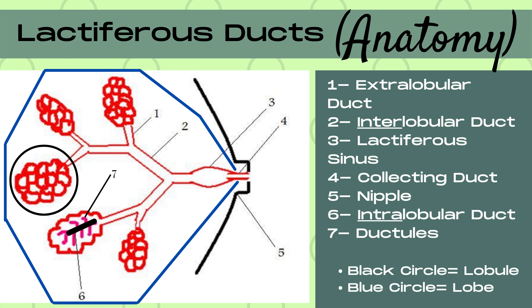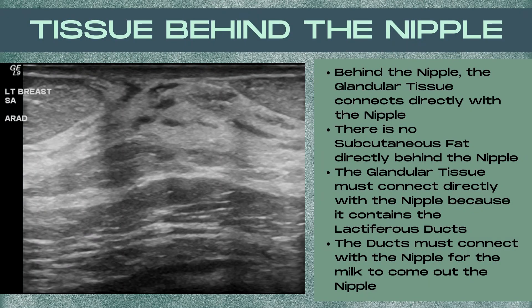Note that the blue circle on this diagram is a breast lobe and the black circle is a lobule, and there are 15 to 20 lobes within a breast. It's important to talk about the breast tissue behind the nipple — there's no subcutaneous fat directly behind the nipple. The glandular tissue connects directly with the nipple because the glandular tissue contains all of the milk ducts, which need to connect to the nipple to get milk out to the baby. So when you're scanning, keep in mind you'll see only glandular tissue in this area.